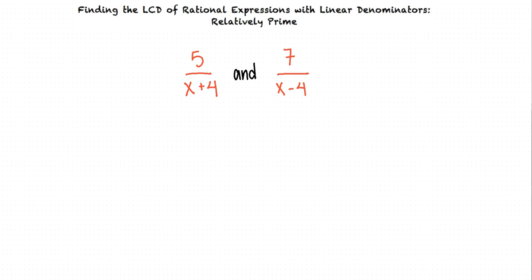The denominators x plus 4 and x minus 4 are relatively prime because they do not have any common factors. When two expressions do not have any common factors, the least common multiple is their product.